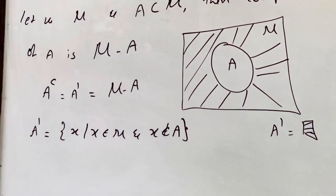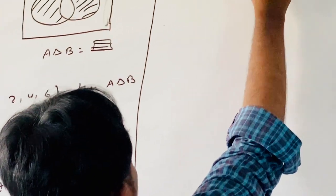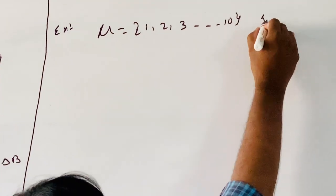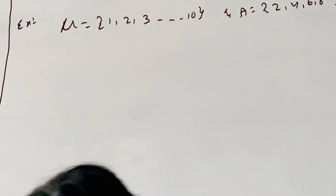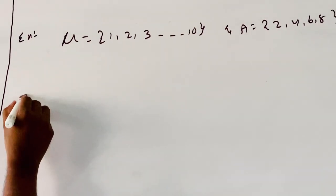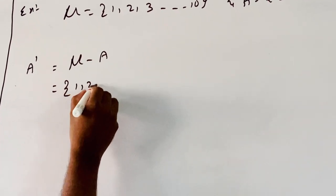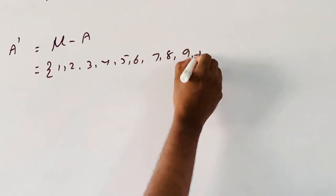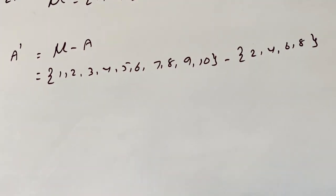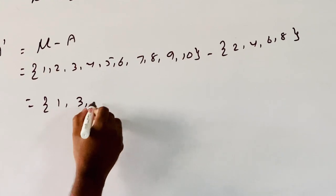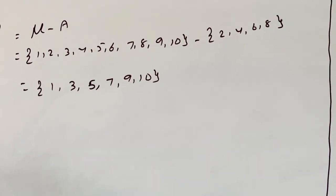For example, if mu is equal to {1, 2, 3, ..., 10} and A is equal to {2, 4, 6, 8}, then find A dash. A dash equals mu minus A, that is {1, 2, 3, 4, 5, 6, 7, 8, 9, 10} minus {2, 4, 6, 8}, which gives {1, 3, 5, 7, 9, 10}. So the complement of A is {1, 3, 5, 7, 9, 10}.